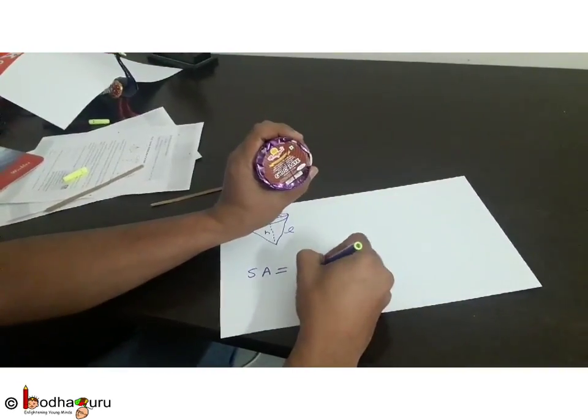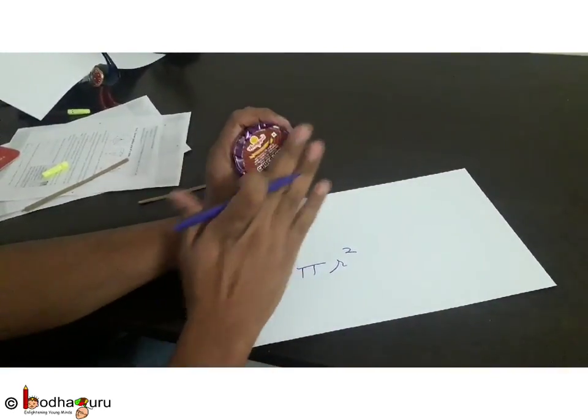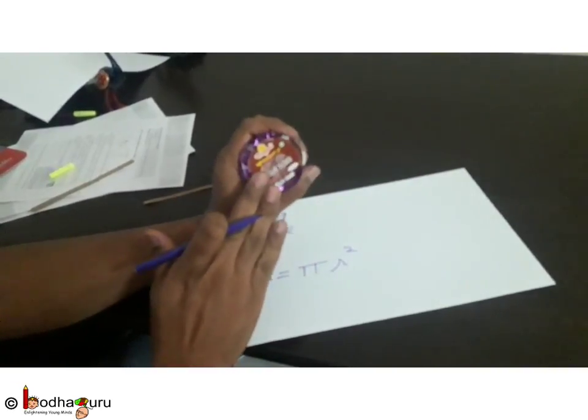And we know the area of the circle is pi r squared. So at least we were able to find the area of this face of the cone, which is pi r squared.